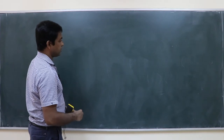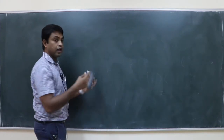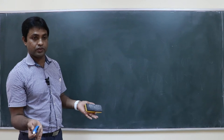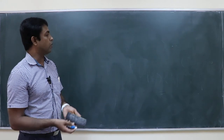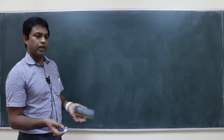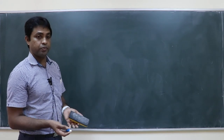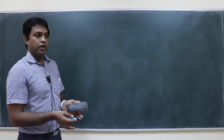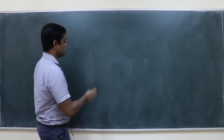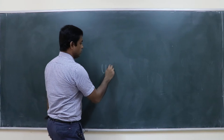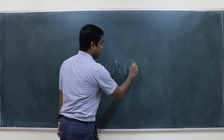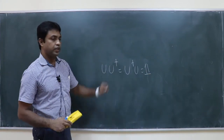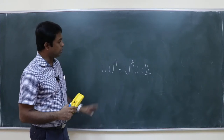A unitary operator is a general class of operators — a unitary matrix is a general type of matrix, like a symmetric matrix or a Hermitian matrix. There are different types of matrices; one type is the unitary matrix. The definition of a unitary matrix is: U U† = U† U = Identity.